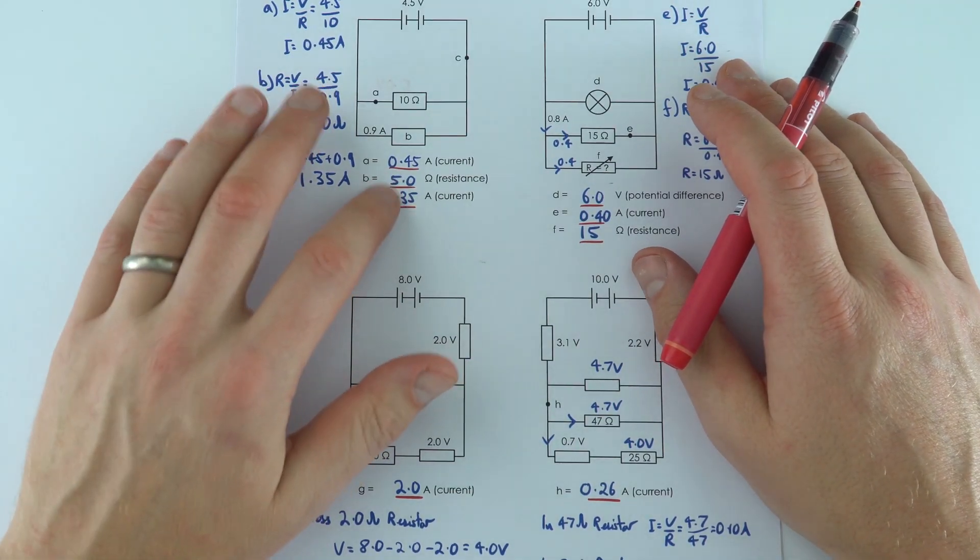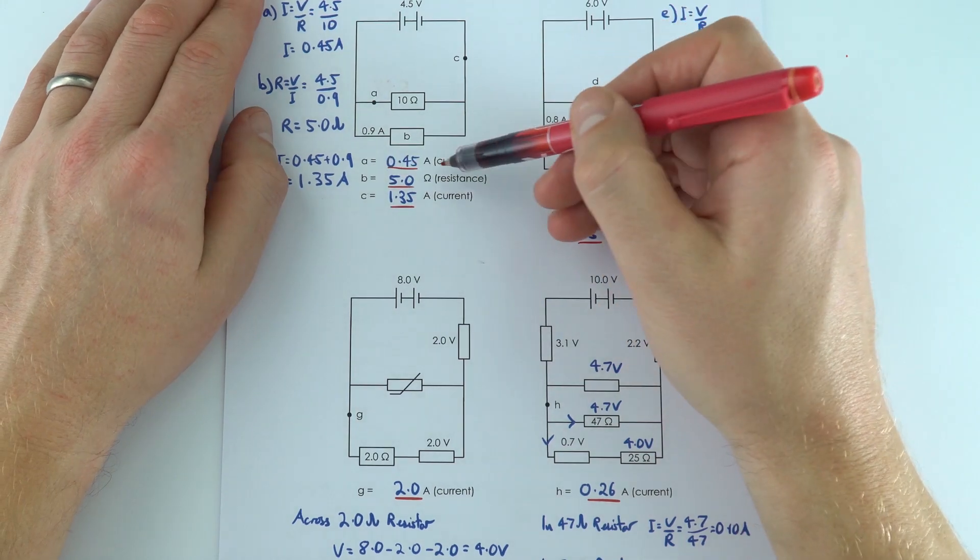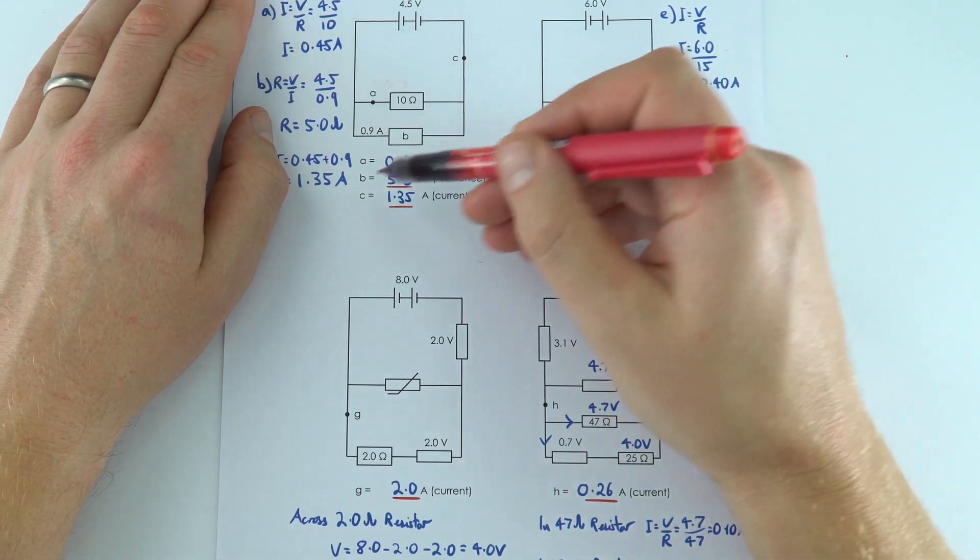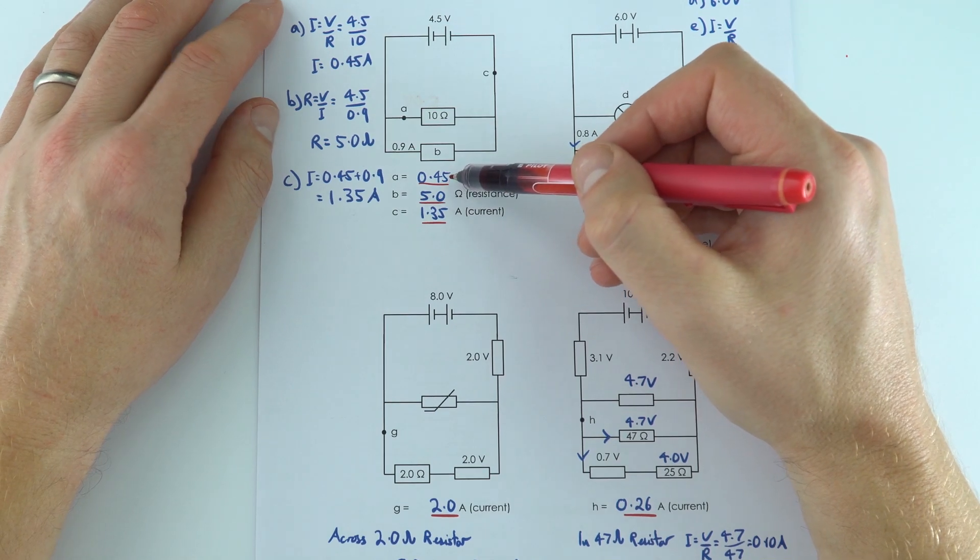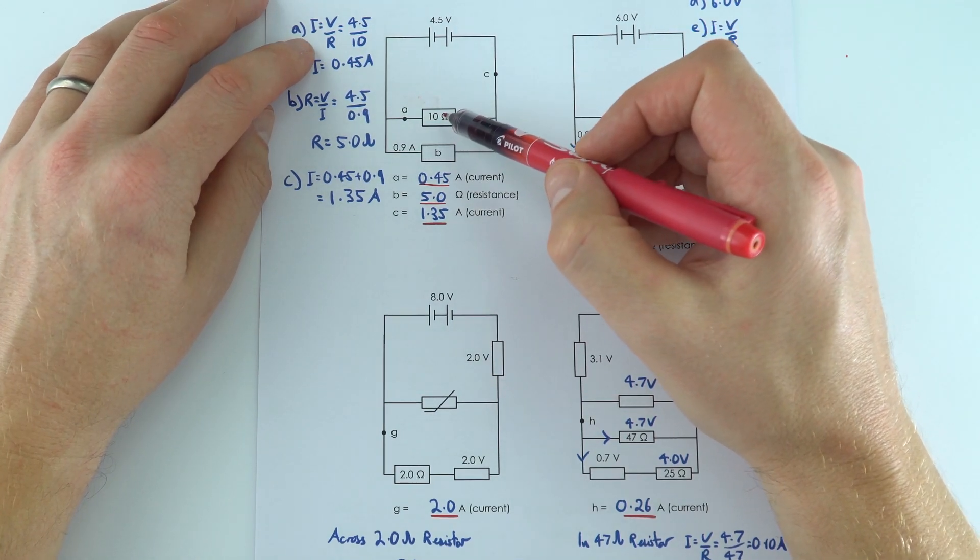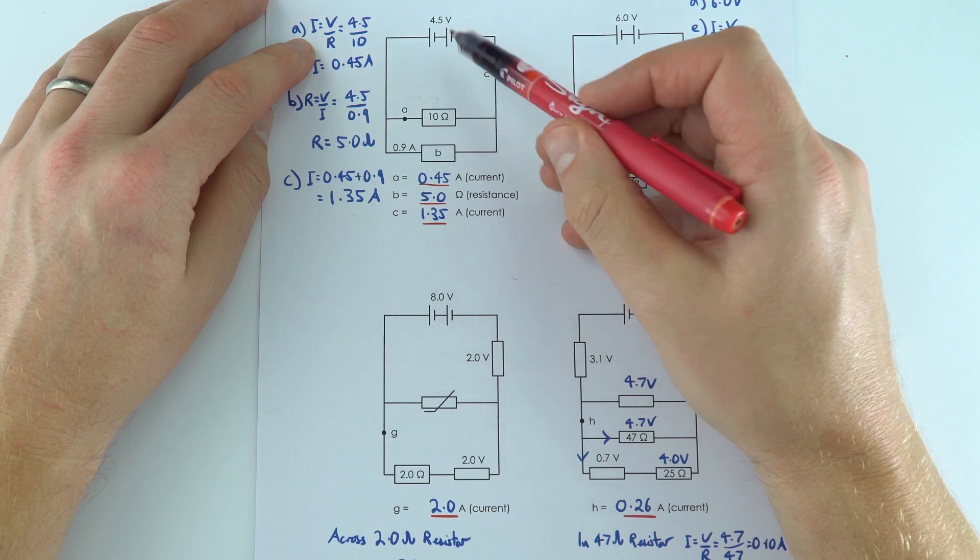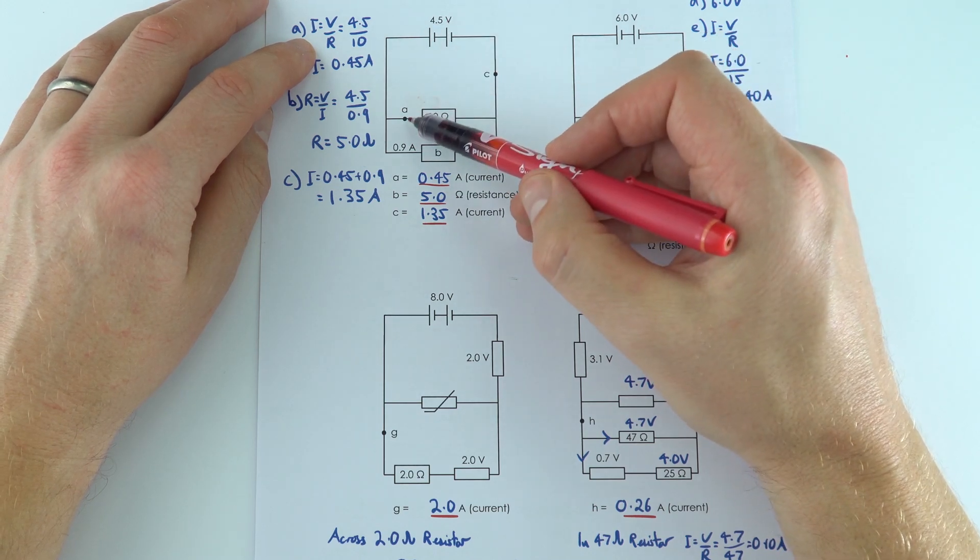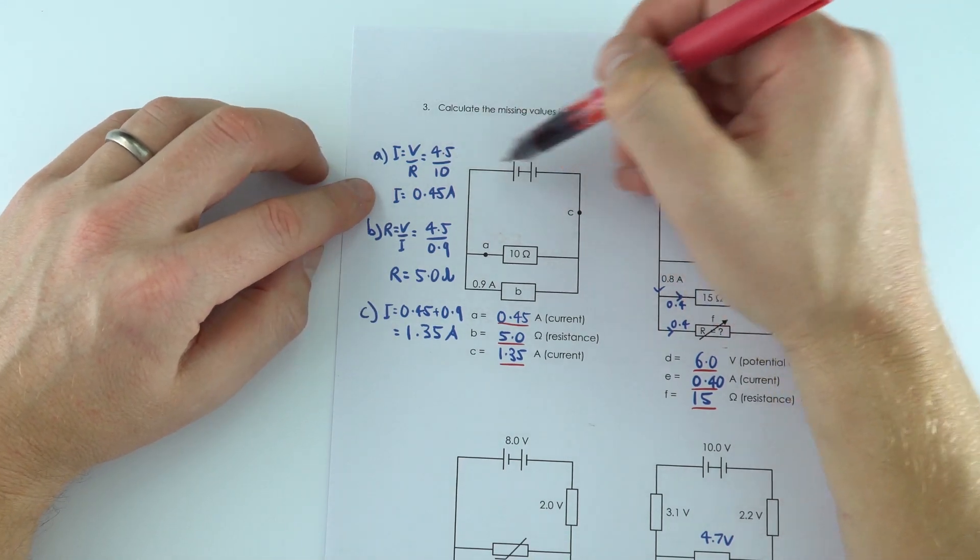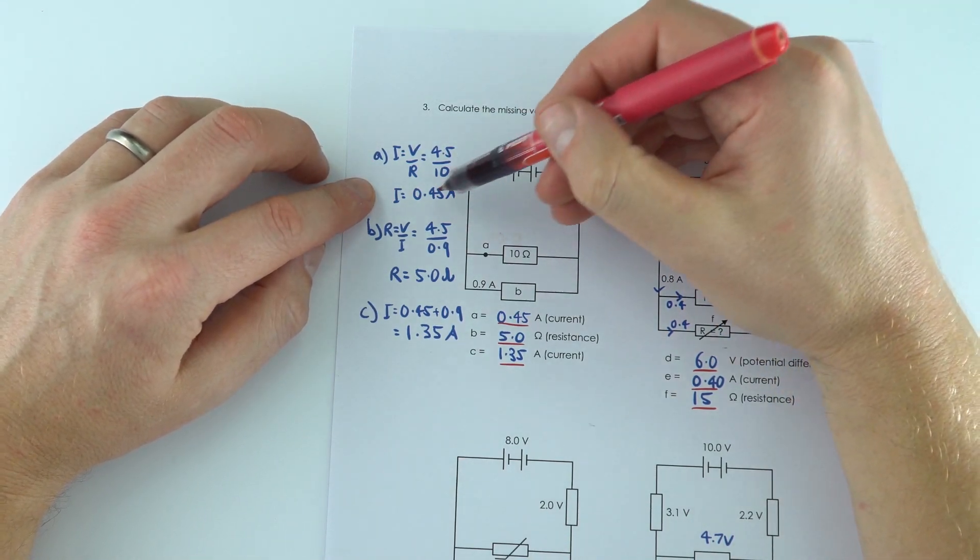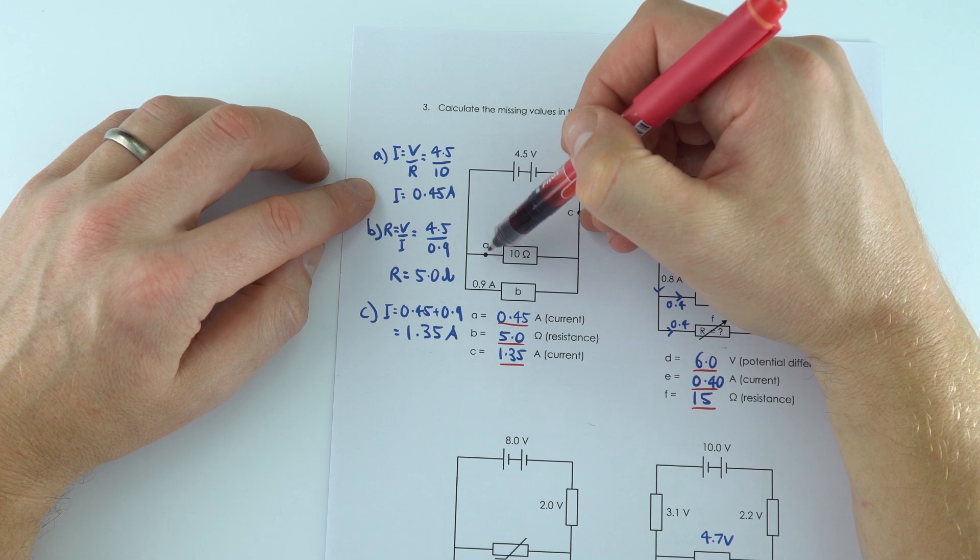Now the last one, a lot of work going on here to get some simple answers. So at A we wanted to find the current, B the resistance, and C the current. So for here at A, what I had to do was work out, if we know that there's a certain resistance with a certain potential difference, we can work out the current. So I chose the right equation, I put in the numbers from the question that I had so far to find that the current here is 0.45.